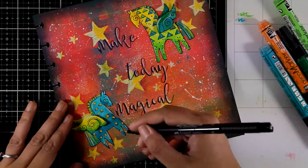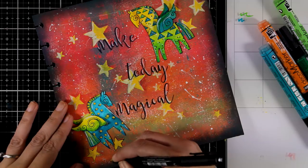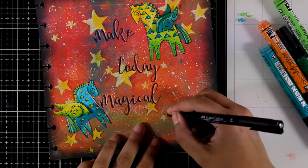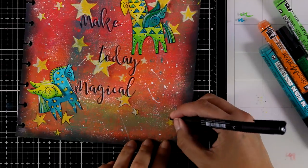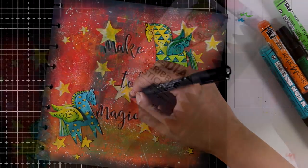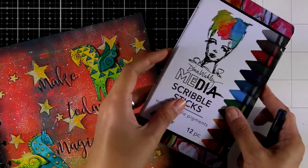Now I'm using a fine tip marker to go around my stars just to give them more definition, to help them stand out more. Also notice that I have also added some white highlighting on my letters.